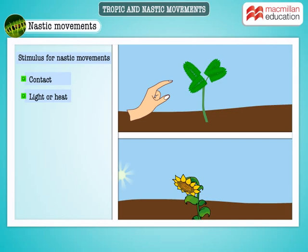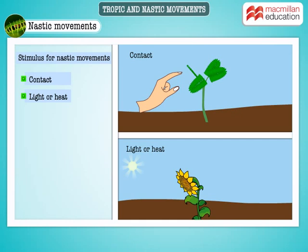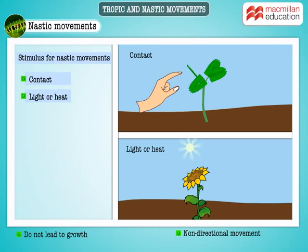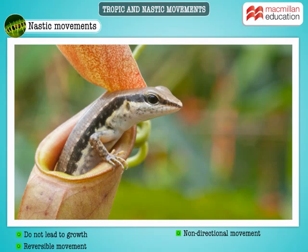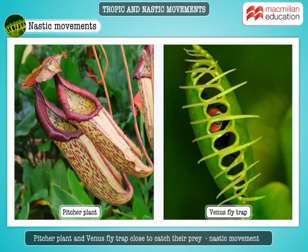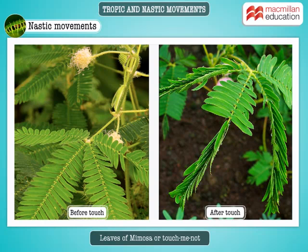Nastic movements in plants are also a response to stimuli such as contact, light, or heat. Nastic movements do not lead to growth and are non-directional movements. Unlike tropic movements, nastic movements are reversible. The pitcher plant and the Venus flytrap close and catch their prey as soon as the prey lands on them. The leaves of mimosa, or touch-me-not plant, close when they are touched. Here the movements do not depend on the direction of the stimulus.